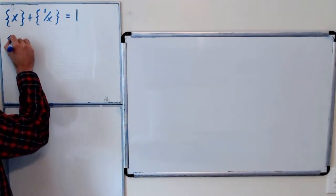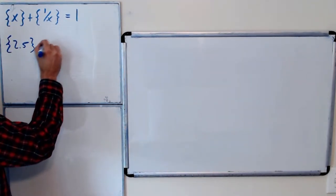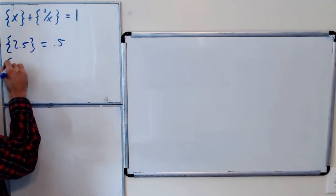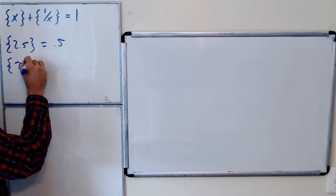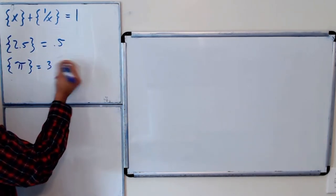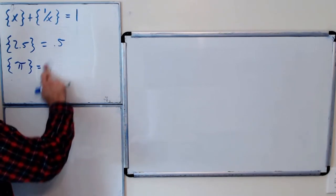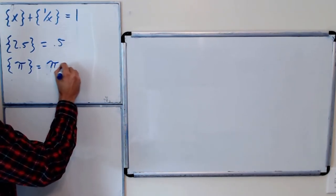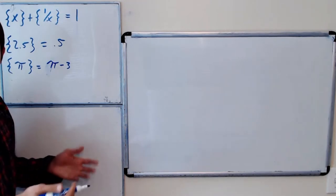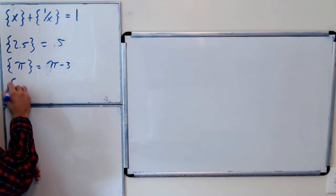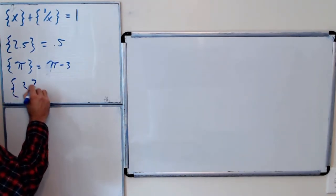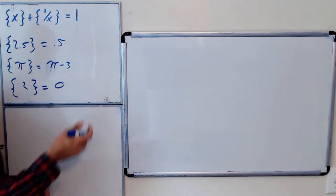So for example bracket 2.5 would be 0.5. Bracket pi would be pi minus 3, which would be like 0.14159 whatever. Bracket 2 would be 0, right there's no decimal part of 2.